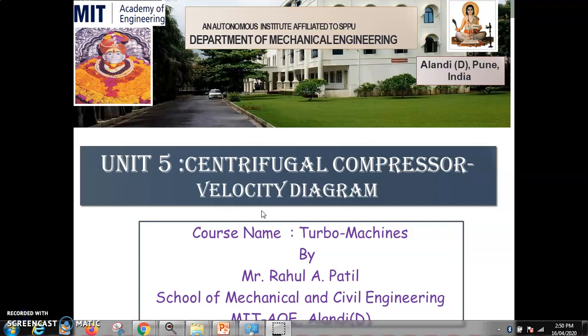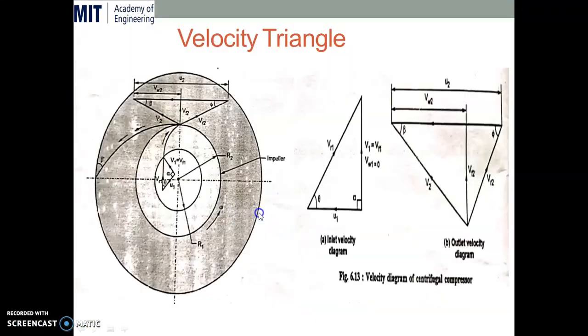Good afternoon, students. We are now going to discuss the next topic in centrifugal compressor, that is velocity diagram or velocity triangle analysis. This centrifugal compressor is basically a radial outward flow turbo machine in which air is flowing from the inner side of the compressor to the outer side in the radial direction.